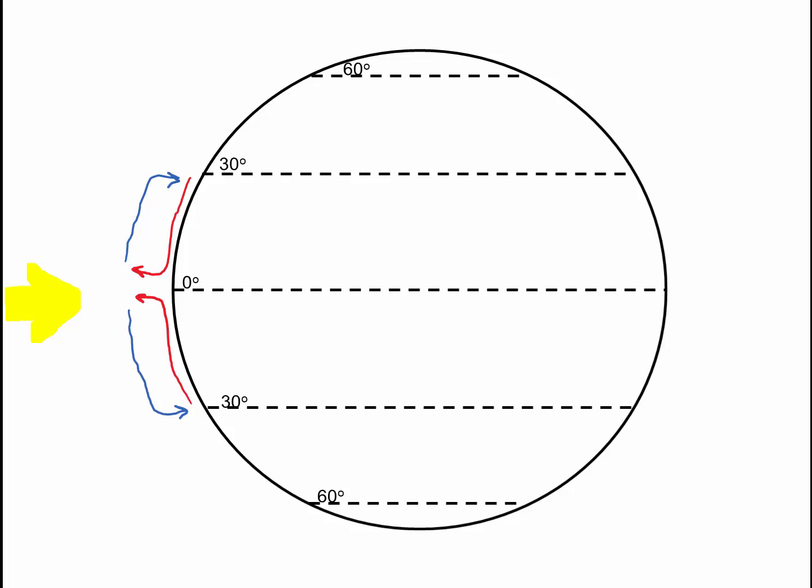So we have these small convection cells referred to as Hadley cells that circulate between 0 degrees latitude and 30 degrees north and 30 degrees south latitude.